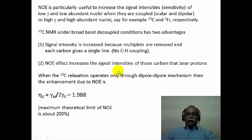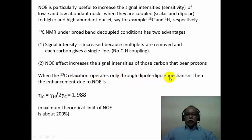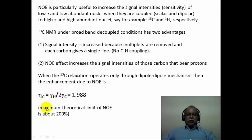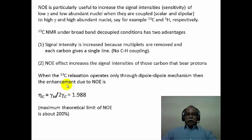Carbon-13 under broadband decoupled conditions has two advantages. First, because multiplicity is lost, all multiplets collapse to a singlet, increasing signal intensity. Second, the NOE effect operates, increasing signal intensity because population differences are higher under double irradiation compared to thermal equilibrium. When carbon-13 relaxation operates only through the dipole-dipole mechanism, the maximum theoretical enhancement is γH / (2γC), which works out to approximately 1.988—meaning roughly 200% enhancement, or about 3 times the original intensity.